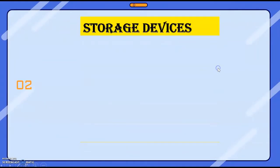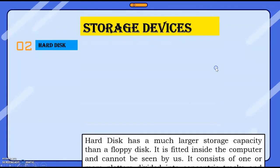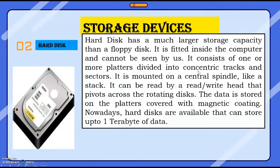Our next storage device is the hard disk. You might have heard of hard disk — somebody must have seen it also. It looks like this. The hard disk's storage capacity is very high compared to the floppy disk, but it is fitted inside the computer. You cannot see it directly because it is normally fitted inside the CPU. If you want to see it you have to open the CPU. It consists of one or more platters divided into concentric tracks and sectors.